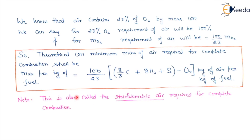In this lecture we have seen how much air — the minimum amount of air — is required for the complete combustion of a fuel. In the next lecture we will see the air-fuel ratio and the stoichiometric air-fuel ratio. Thanks for watching this video and have a good day.